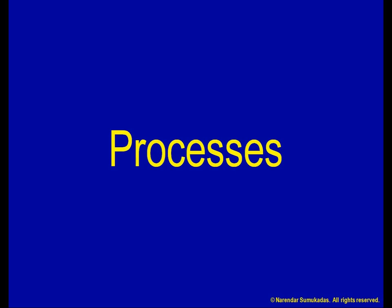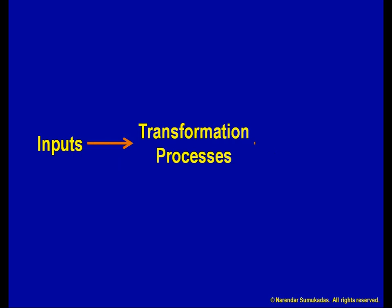Let us now talk about processes. We have seen that operations management involves taking inputs and producing outputs using transformation processes, and operations management is really about managing these transformation processes well, so that we can produce more outputs using fewer inputs — that means we can get better productivity.